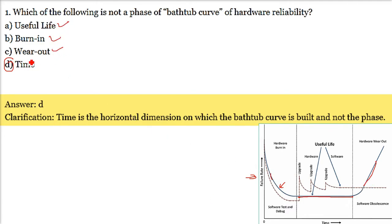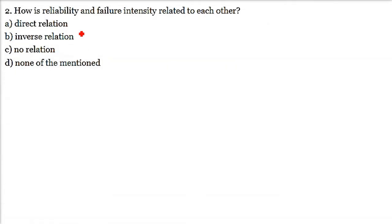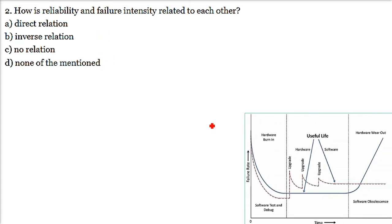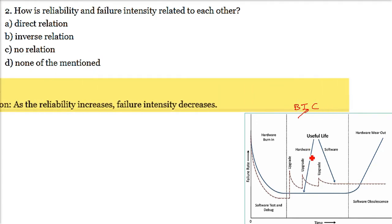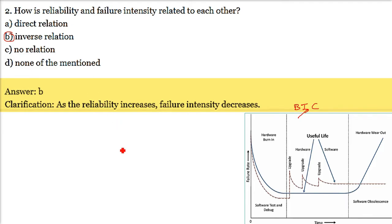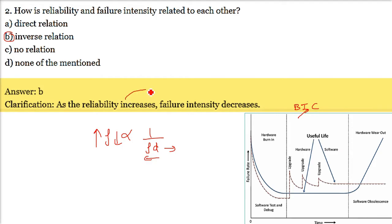Time is not a phase - it is the x-axis. How are reliability and failure intensity related to each other? They are inversely proportional. The bathtub curve implies that reliability is inversely proportional to failure intensity. If failure intensity is higher, reliability will be less. Reliability is the probability that a software or hardware product will provide failure-free operation for a specified period of time under specified conditions.